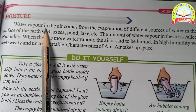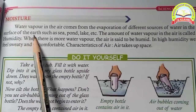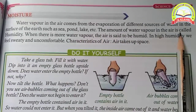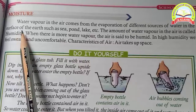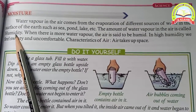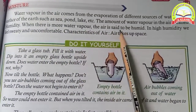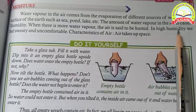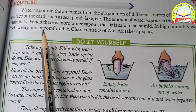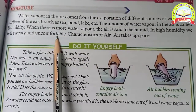Next is moisture. Water vapor in air comes from the evaporation of different sources of water on the surface of the earth — sea, pond, lake, etc. The amount of water vapor in air is called humidity. When there is more water vapor, air is said to be humid. In high humidity we feel sweaty and uncomfortable.